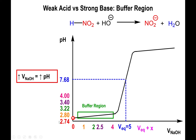Looking at the graph, the pH at the equivalence point is clearly greater than 7. Also notable: instead of the pH changing by 0.2 or 0.6 units as in the buffer region, it now changes by a whopping 3.68 units, because you no longer have a buffer.